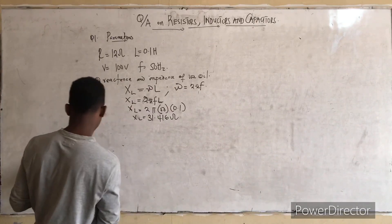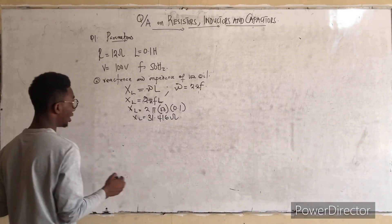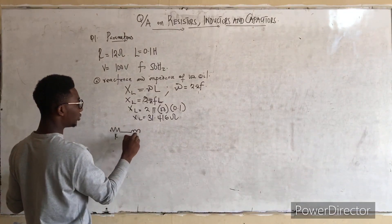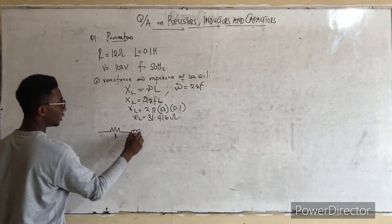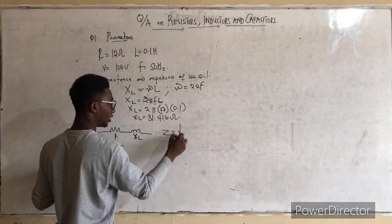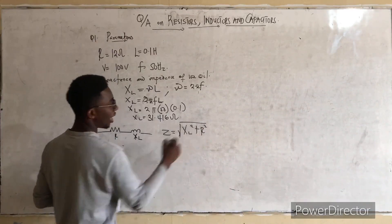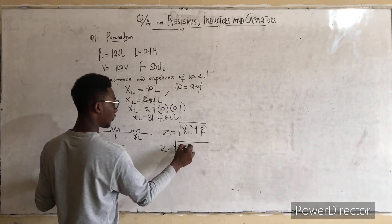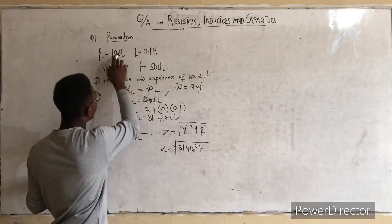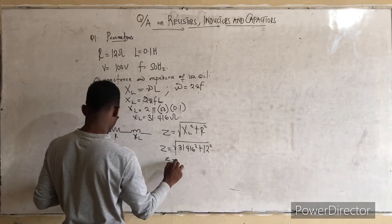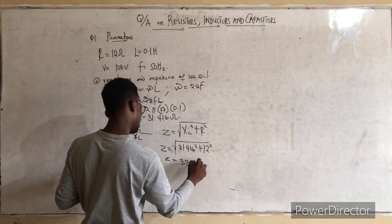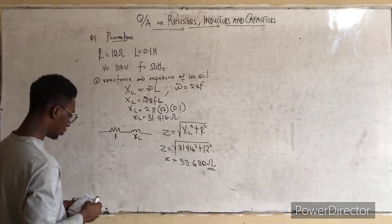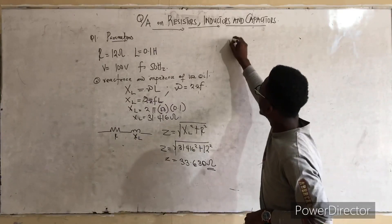Now for the impedance: when a resistor is connected in series with an inductor, the impedance Z = √(XL² + R²). So Z = √(31.416² + 12²), which gives us Z = 33.630 ohms. That is the impedance for this question.